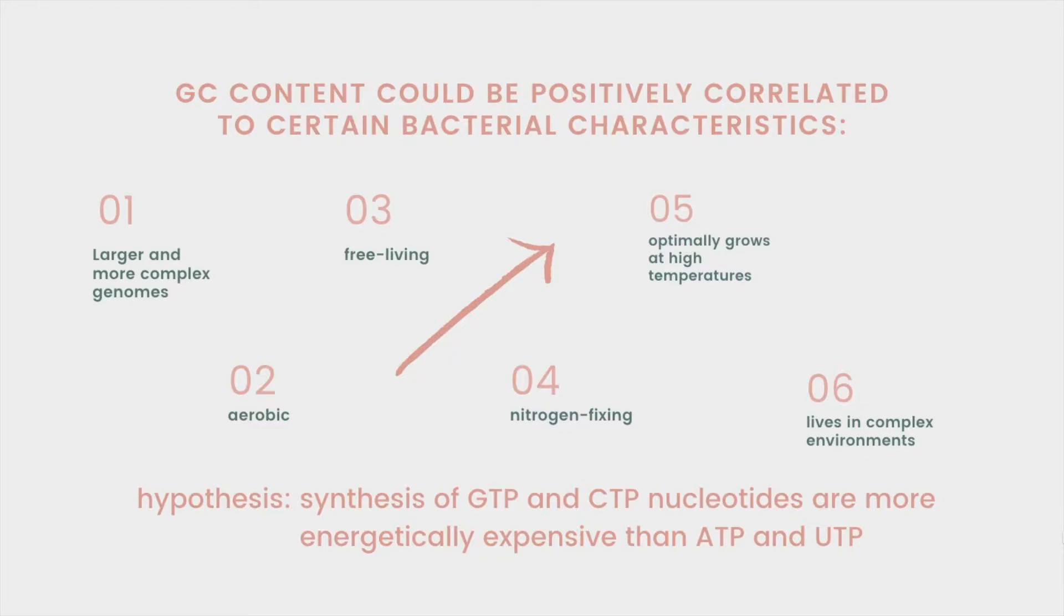The reason for these correlations is hypothesized to be due to synthesis of GTP and CTP nucleotides being more energetically expensive than ATP and UTP. However, it is important to note that the above correlations are not very strong as confounding variables or selection bias may be involved. Nevertheless, we will see later on if the GC content of Neisseria gonorrhoeae will match up to these characteristics.